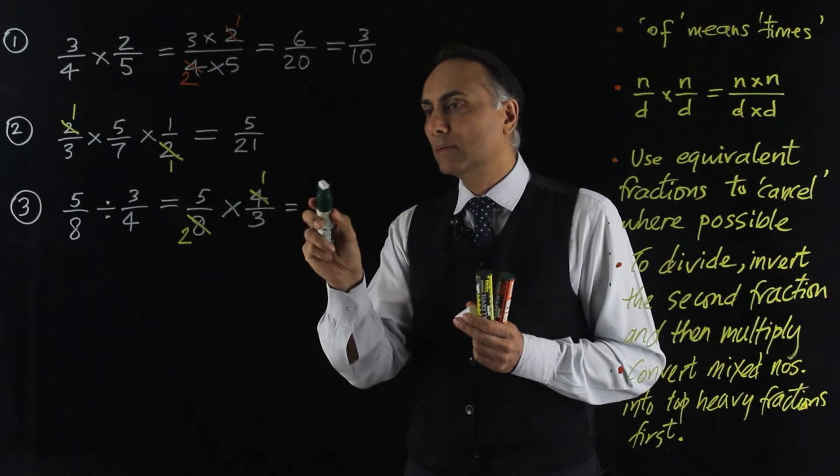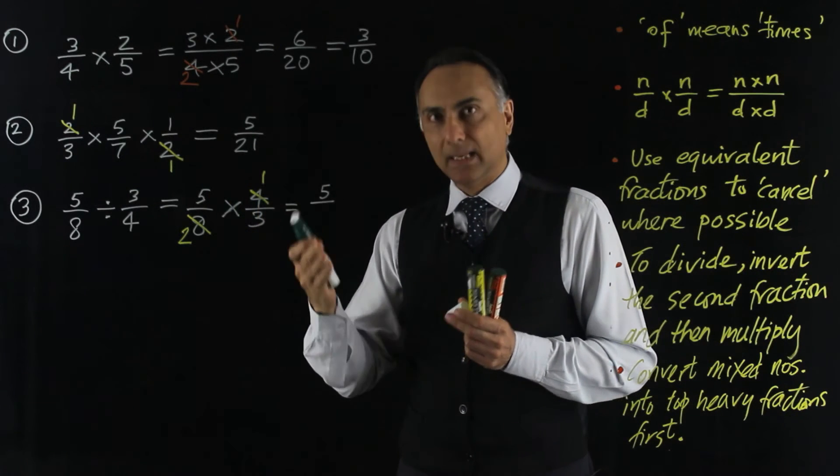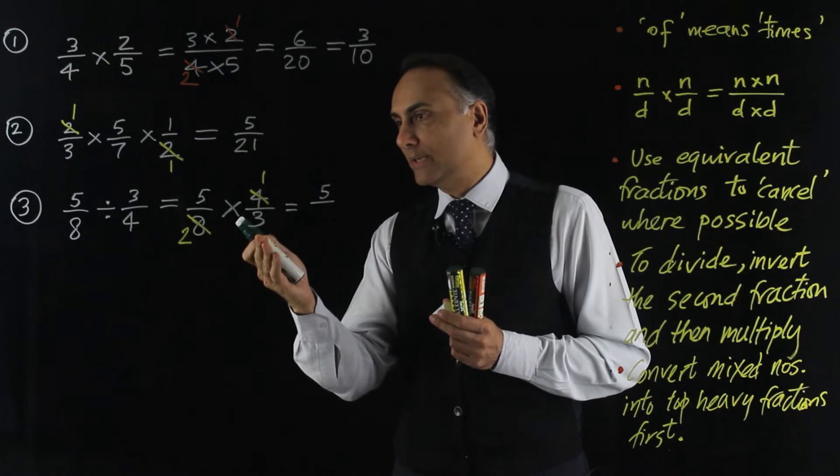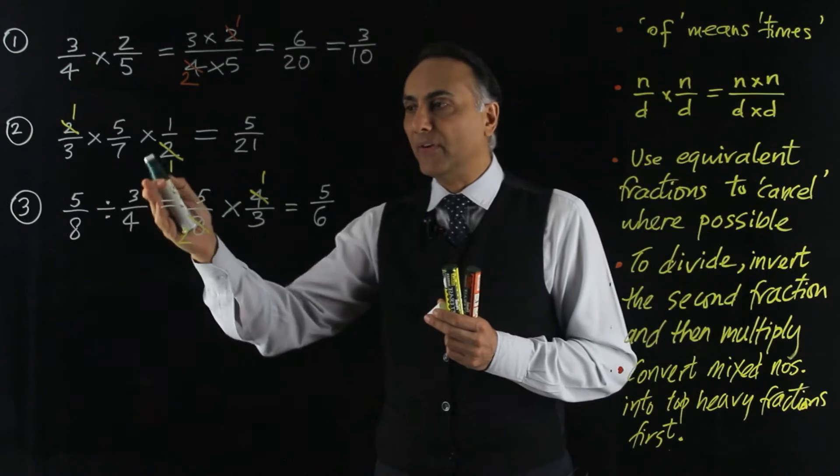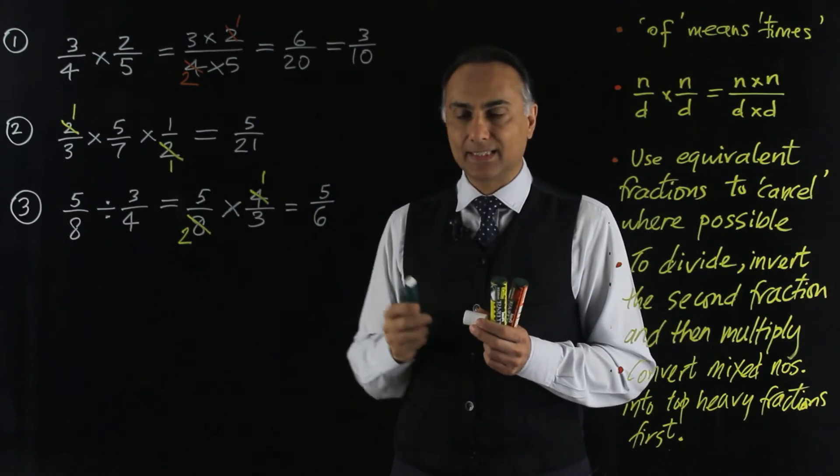So for my numerator, I have 5 times 1, which is 5, and my denominator is 2 times 3, which is 6. So 5 eighths divided by 3 quarters is 5 sixths.